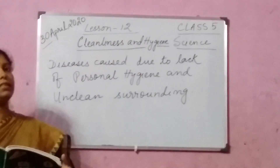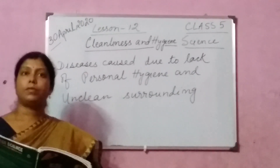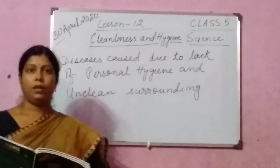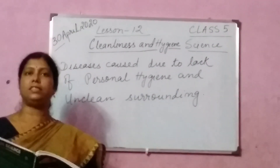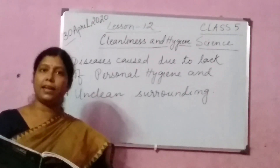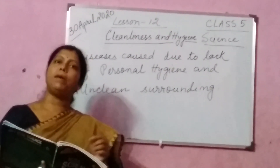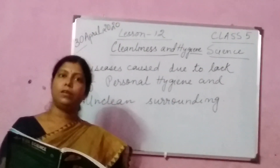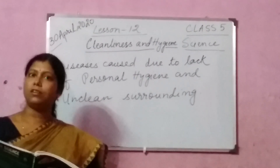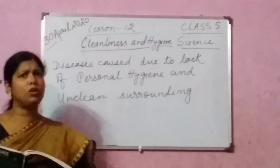Now how can diseases be caused to a person? They can spread through air, through water, food, and insects. If an insect bites you — like if a mosquito bites you — malaria can happen. The mosquito is the carrier of that germ or disease.